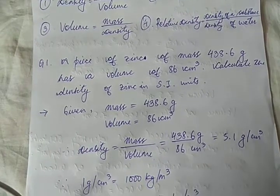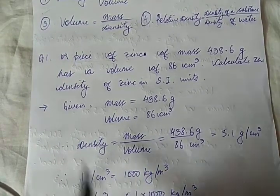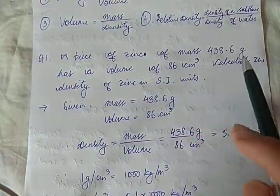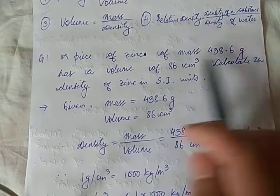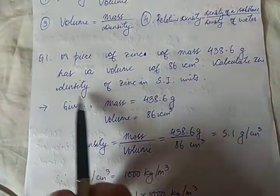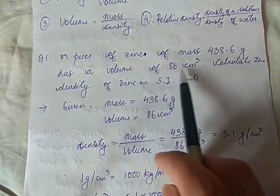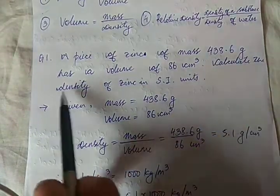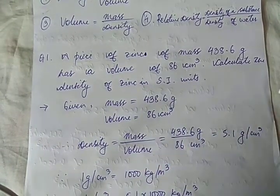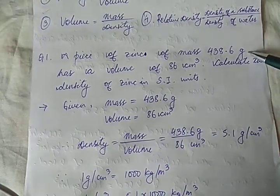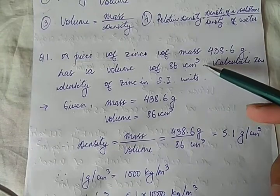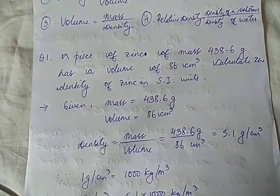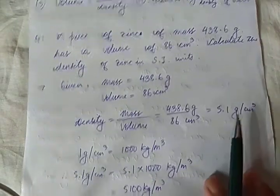Problem 1: A piece of zinc has a mass of 438.6 grams and a volume of 86 cubic centimeters. Calculate the density of zinc in SI units. As you can see, grams is not the SI unit of mass and cubic centimeter is not the SI unit of volume, but we need to calculate density in SI units.